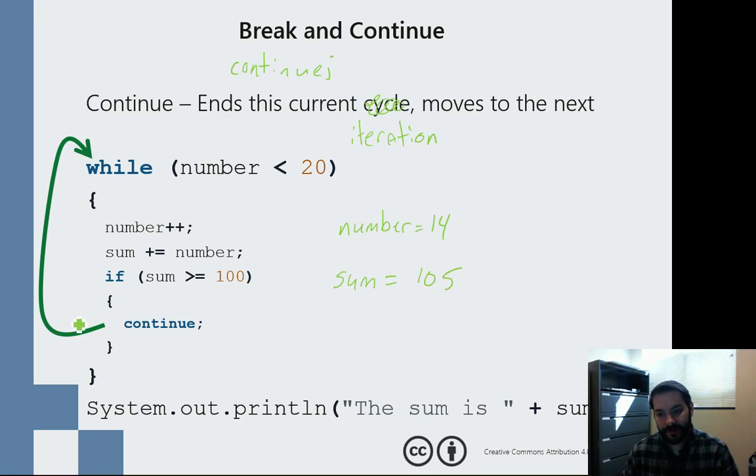What happens here? We hit the 105. 105 is greater than 100. Continue. Continue just tells it to go right back to the top.